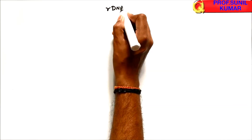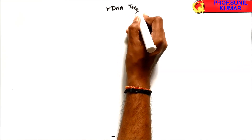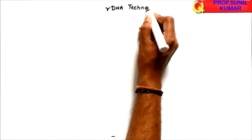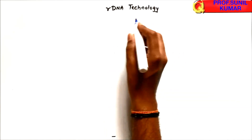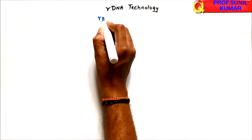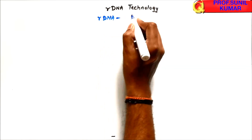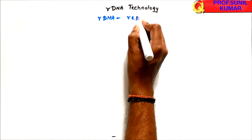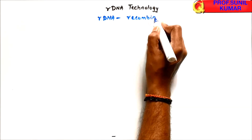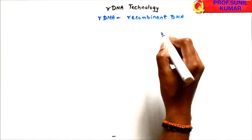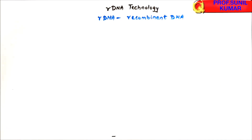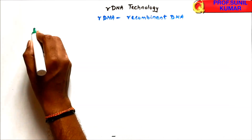When we talk about rDNA technology, first we should understand the meaning of the word rDNA. Whenever we use the word rDNA, it simply means recombinant DNA. Recombinant DNA means DNA carrying some other DNA. When we talk about rDNA technology, there are certain steps involved that we need to follow.